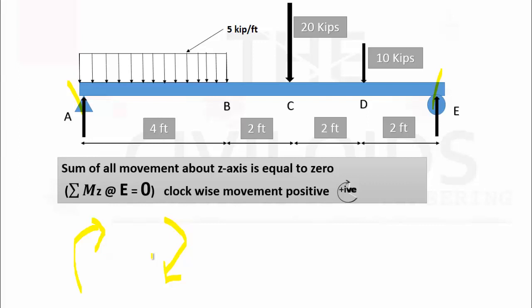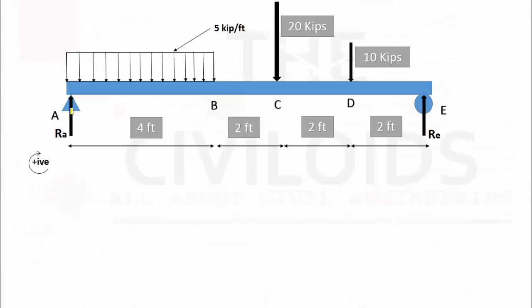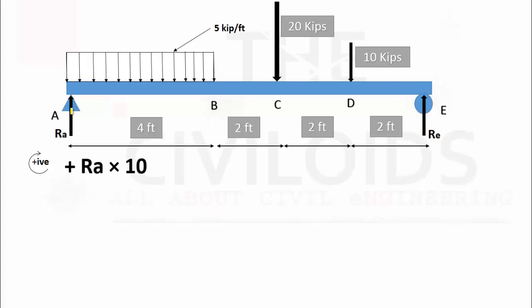Starting from the left side of the beam, the first force acting on the beam is RA. The moment of this force will be equal to RA multiplied by 10, because the moment of a force about a point equals the magnitude of that force multiplied by its perpendicular distance to the point at which the moment is taken. This moment is positive because RA is producing a clockwise moment about point E. The second force acting on this beam is the distributed load.